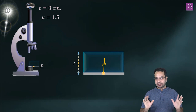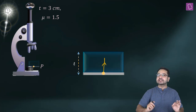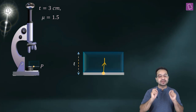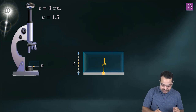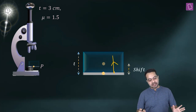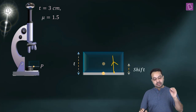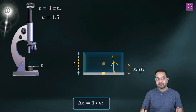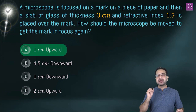The surrounding is air and the slab is glass, so the refractive index of the slab is greater than that of the surrounding. Therefore, the shift is going to happen in the direction of the incident light. The microscope has to be shifted by one centimeter in the upward direction. Looking at the options, option A is the correct answer.